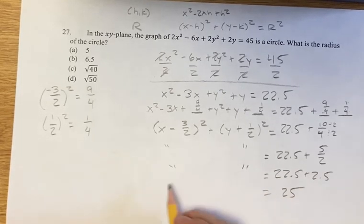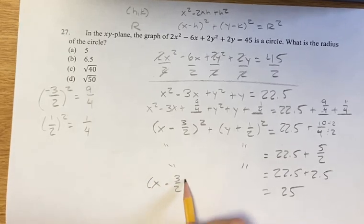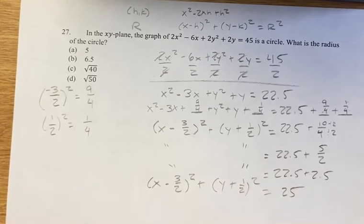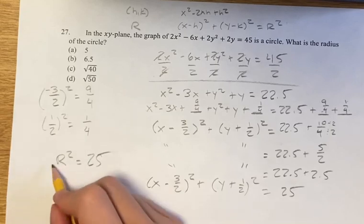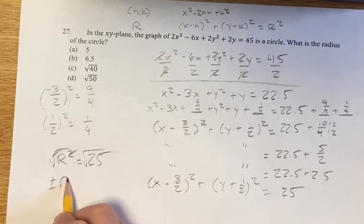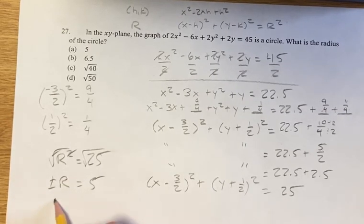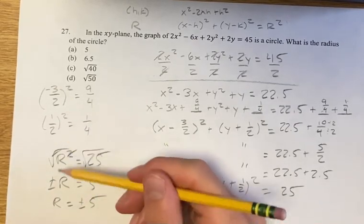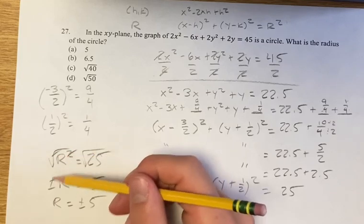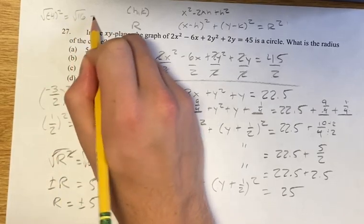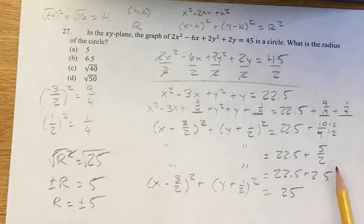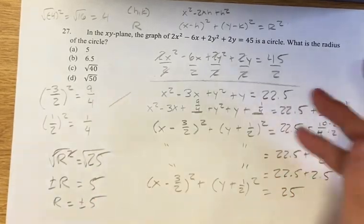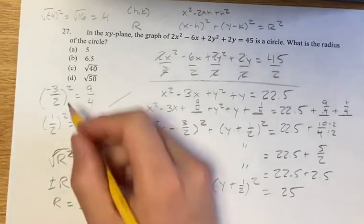So 22 and a half plus 2 and a half is 25. Rewriting, we have x minus 3 halves squared plus y plus 1 half squared equals 25. We're asked for the radius of the circle. Looking back at our standard form, r squared equals 25. Taking the square root gives plus or minus r equals 5. We include plus or minus because the square root of r squared could be negative r. However, the radius is a physical distance and cannot be negative, so r equals positive 5.